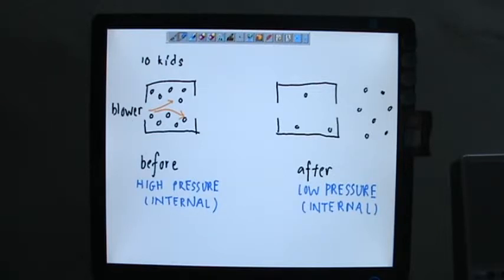Okay, this fan is blowing so some of the kids have been scattered out. Scattered out means being blown off the room. But before being blown off the room, they move about randomly. Internally they have high pressure.